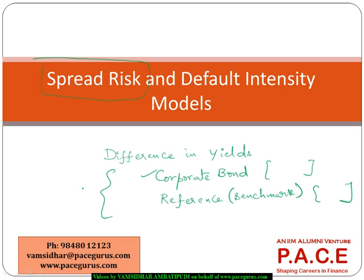In this process, it is assumed that the maturity of both instruments — whether it is the security of my interest or the security with which I am comparing — should have the same level of maturity. So whatever is the difference is a reflection of the additional risk that is present in my security of interest compared to the benchmark. It is a straightforward indication of the excess risk present in the security of interest.